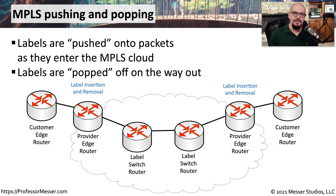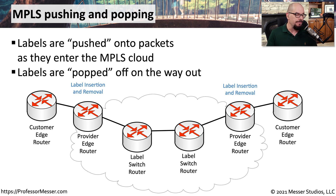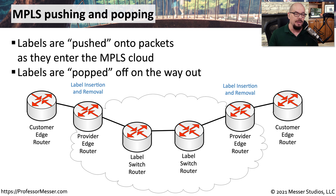With IP routing, we're always concerned about IP subnetting and the next hop. With MPLS, we make forwarding decisions based on label switching. When data is sent into the first provider edge router, that router inserts — or pushes — a label onto the data. It then knows how to forward that traffic through the internals of the provider switch network. When the data reaches the other side, that label is popped off and the remaining data is sent to the customer edge router.